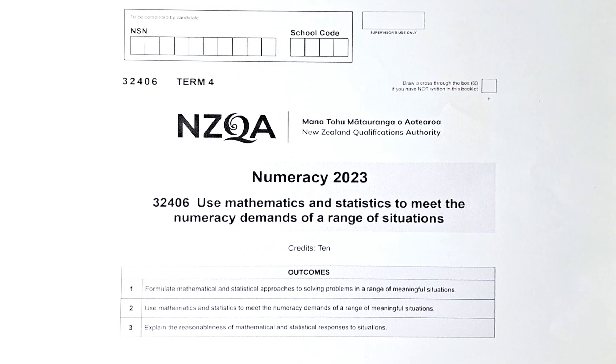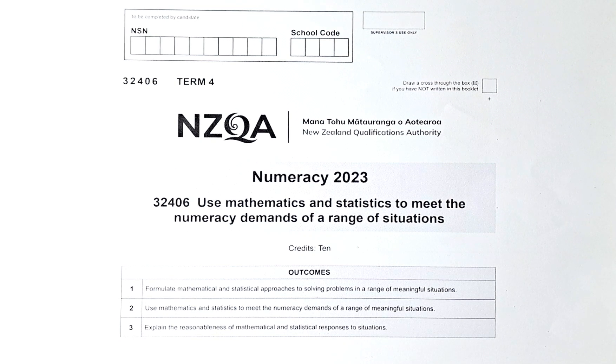Good day! In this video, we are going to try and solve question 3A, 3B and 3C of the 2023 November NZQA Numeracy Exam. It's called Use Maths and Stats to Meet the Numeracy Demands of a Range of Situations. The paper number is 32406.